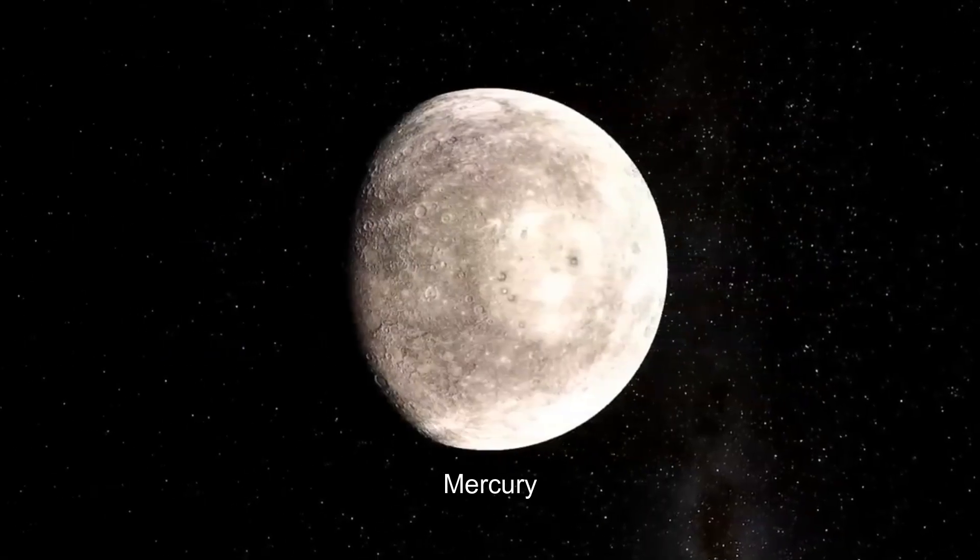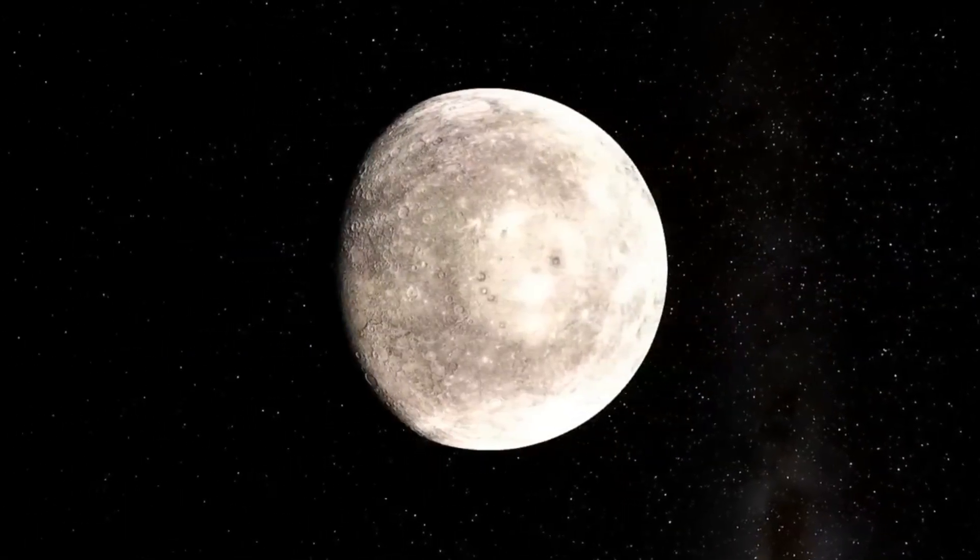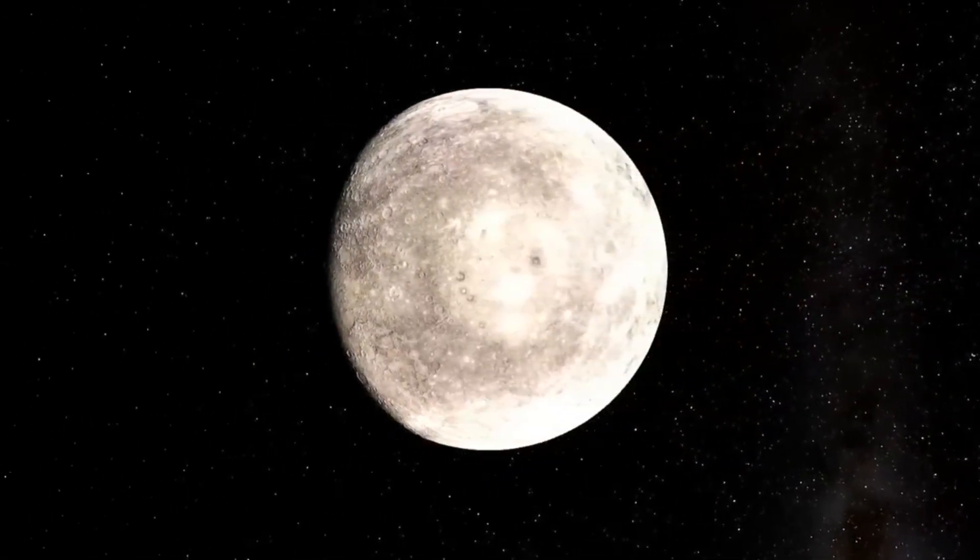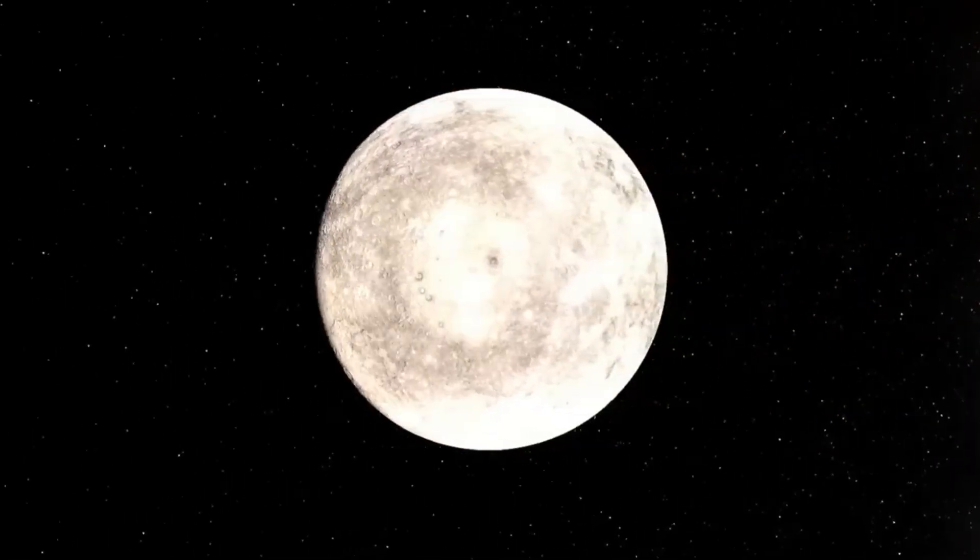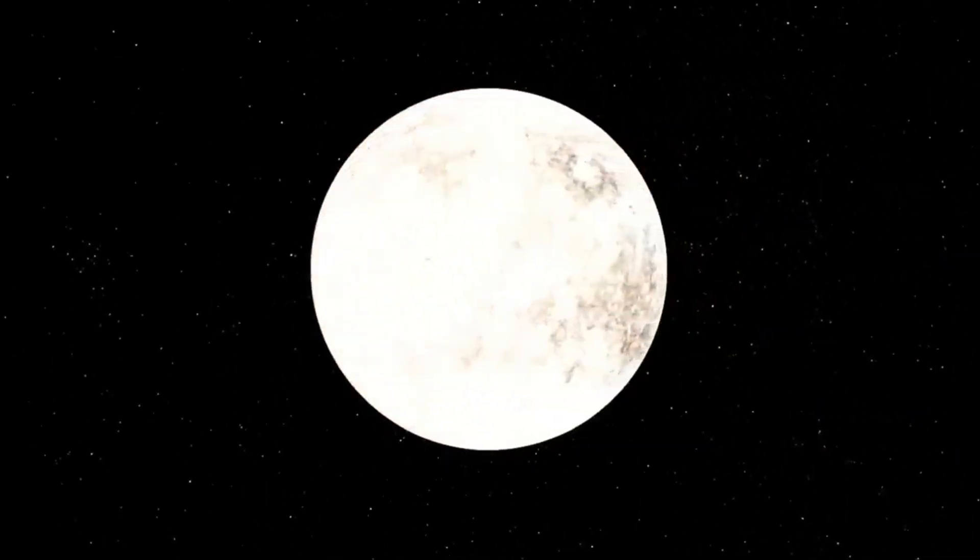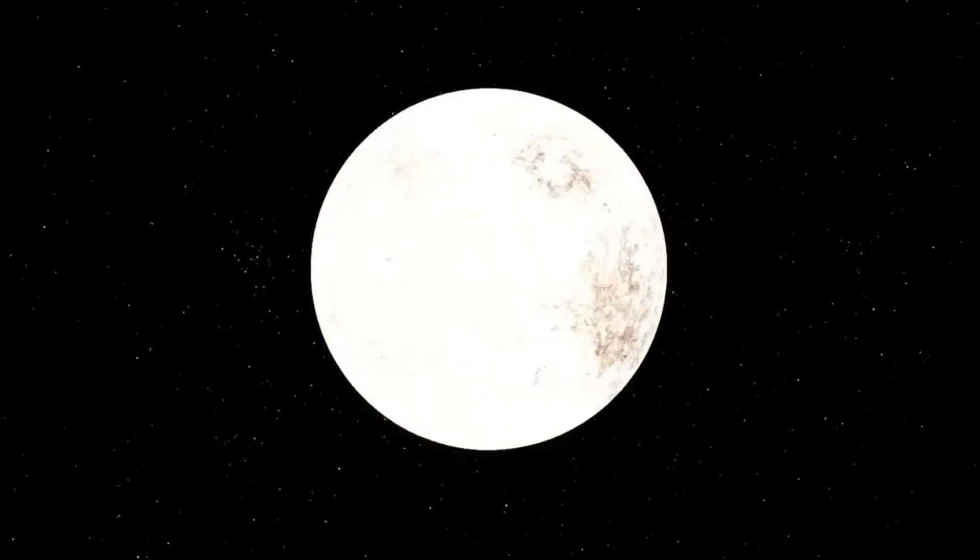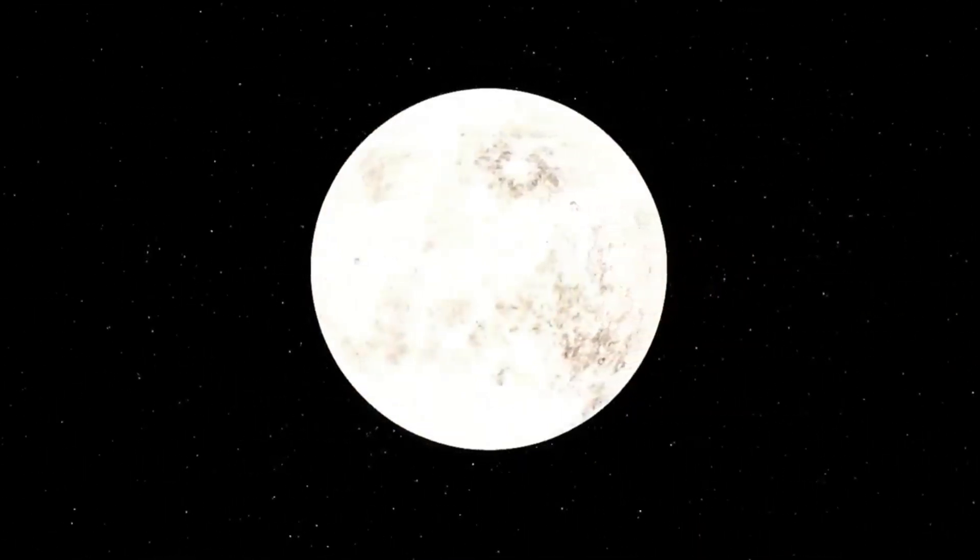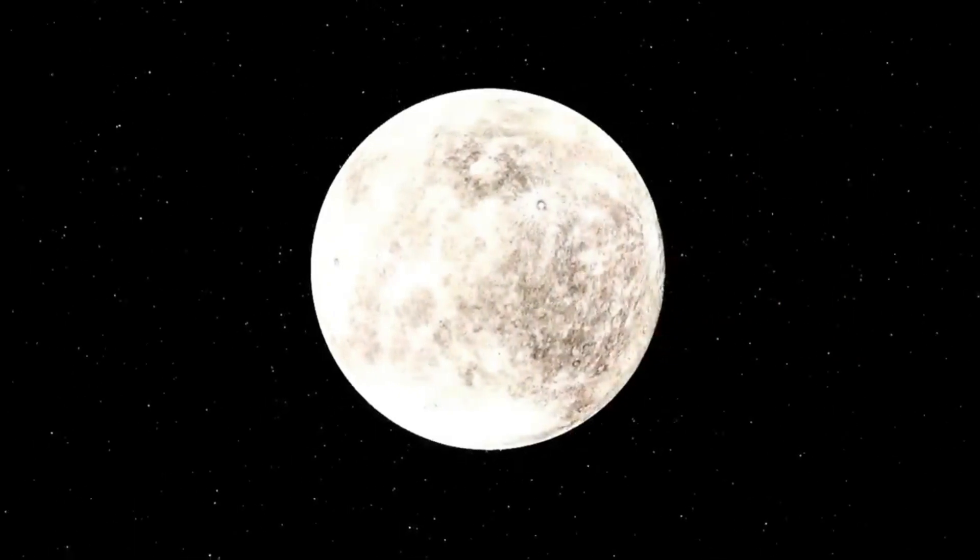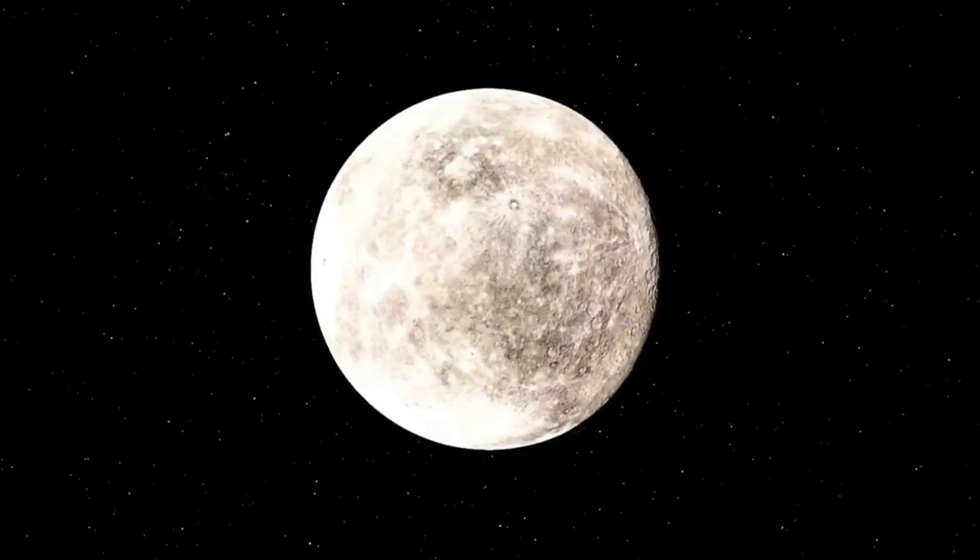Mercury. Starting from the sun, the first planet we find is called Mercury. It is the smallest planet in the solar system and the closest to the sun. Its temperature can vary between an overwhelming heat of 400 degrees and in its non-illuminated part a freezing cold of 170 degrees negative.